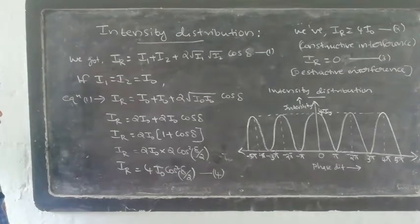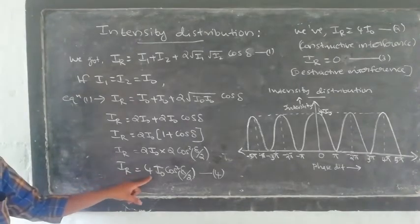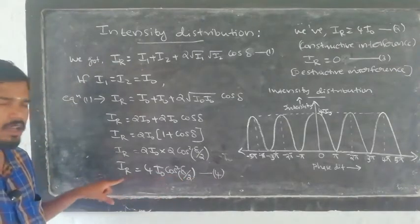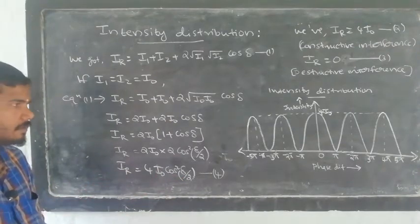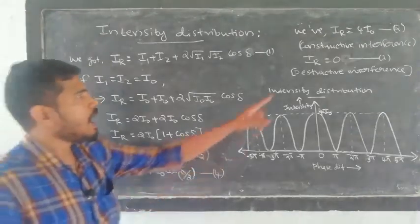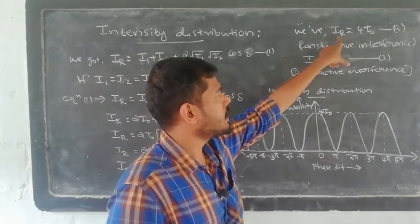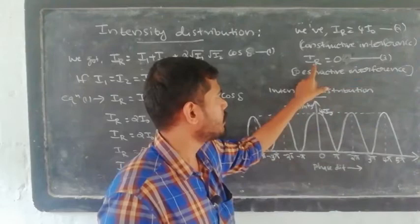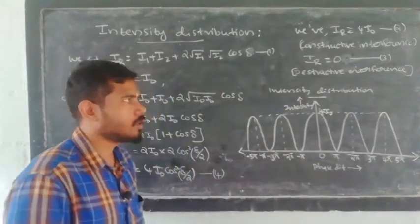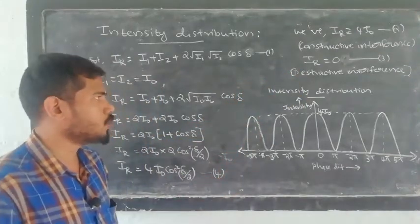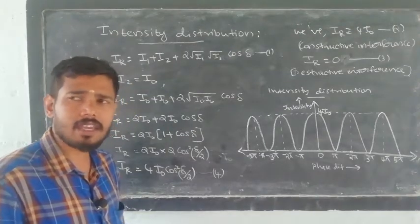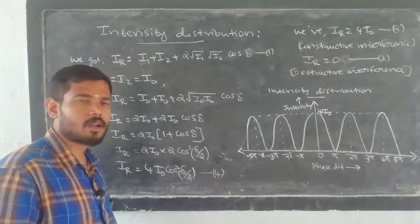The general expression for resultant intensity when two coherent waves are superimposed is Ir = 4i0·cos²(delta/2). For constructive interference, I_max = 4i0. For destructive interference, I_min = 0.